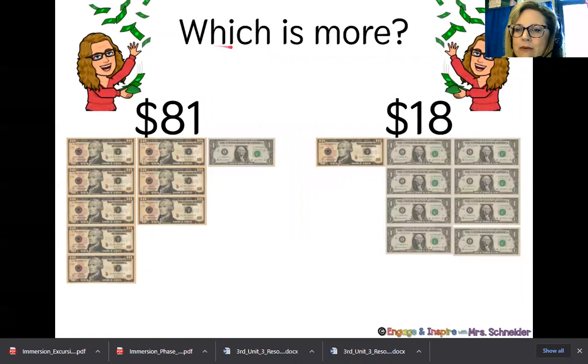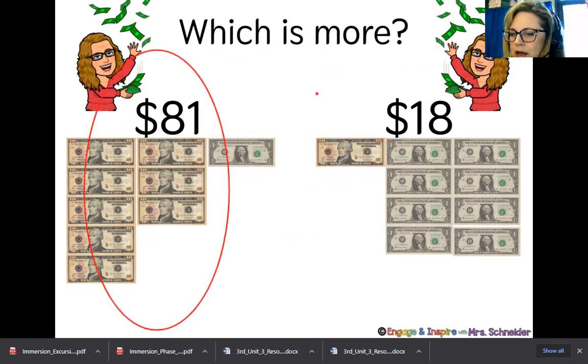Let's think again, which is more? $81 or $18? So we've switched the numbers around. We have eight tens, and here we have one ten. We had one one here and eight ones over here. So which one is bigger? $81.